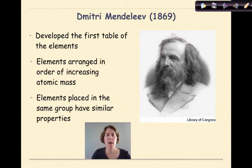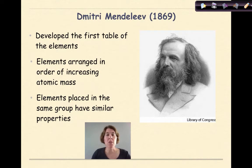We start our conversation about the periodic table with a man named Dmitry Mendeleev. Now there were many people around this time talking about the organization of the periodic table and making contributions, but when history identifies one person that gets the credit for the development of the periodic table, it's typically Mendeleev, because he was the first one to really publish his works back in 1869.